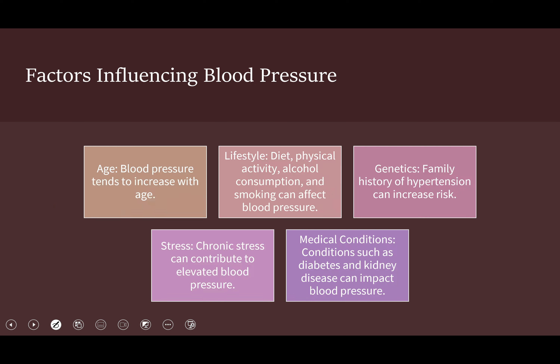Factors that influence blood pressure include the age of the person, lifestyle, diet, alcohol consumption, and smoking. Lifestyle diseases and obesity are linked to hypertension. Genetics and family history of hypertension can increase the risk. Chronic stress can contribute to elevated blood pressure, and medical conditions such as diabetes and kidney disease can also impact blood pressure.